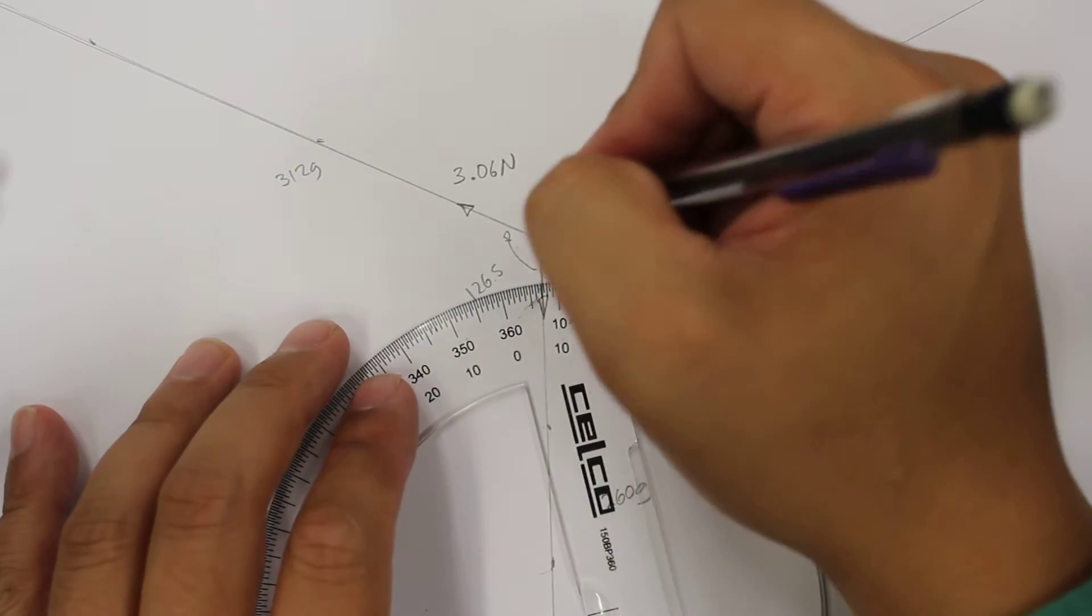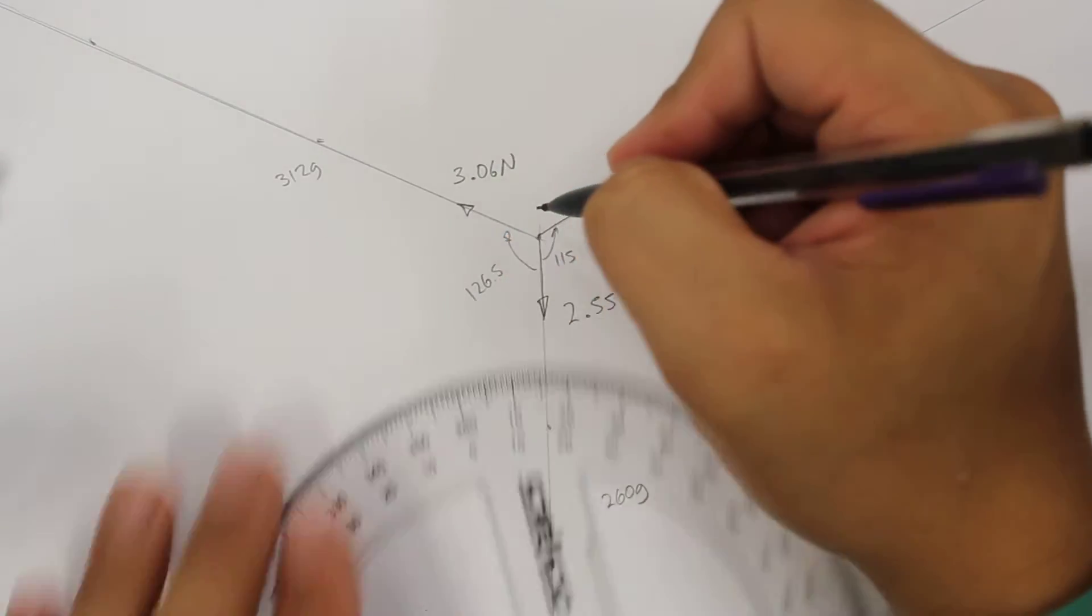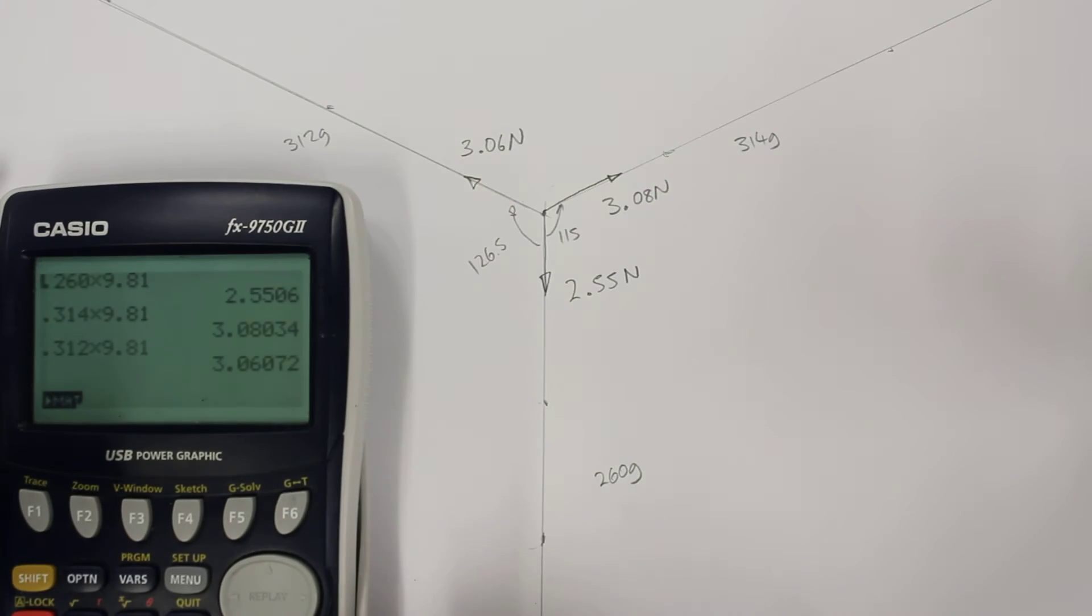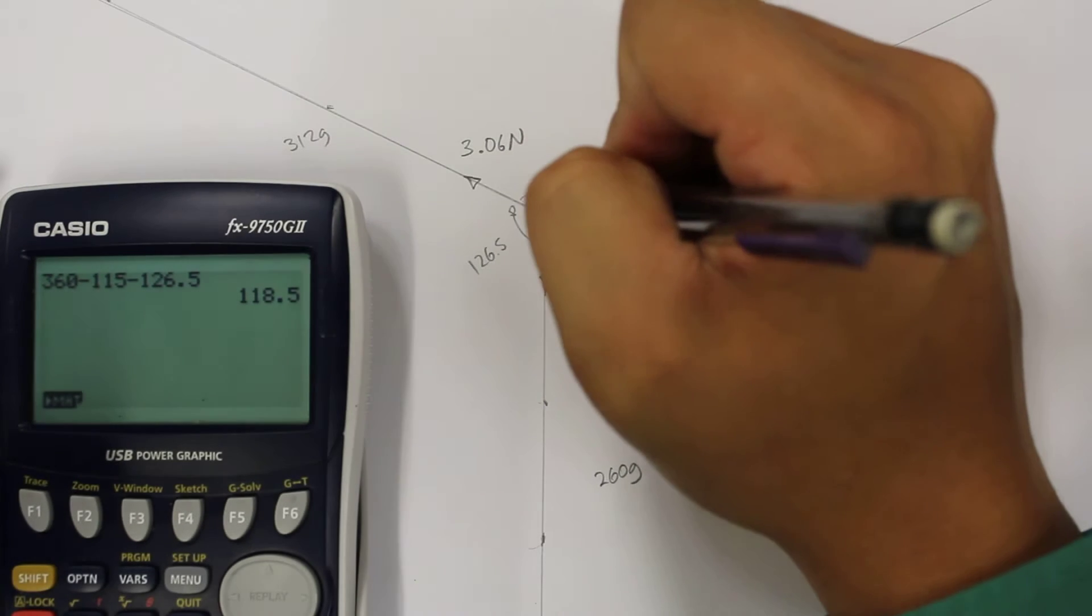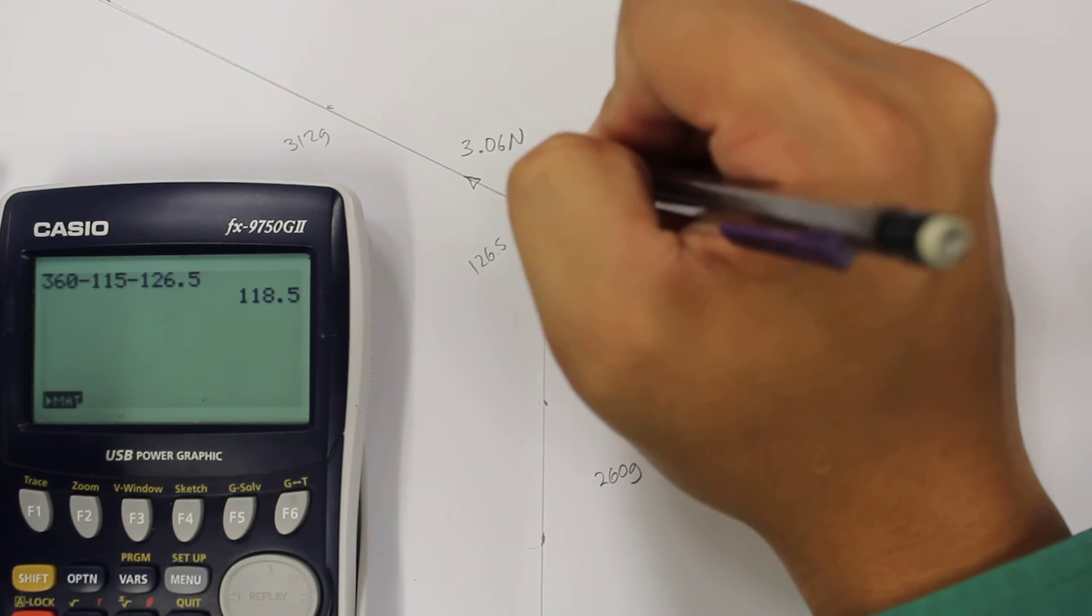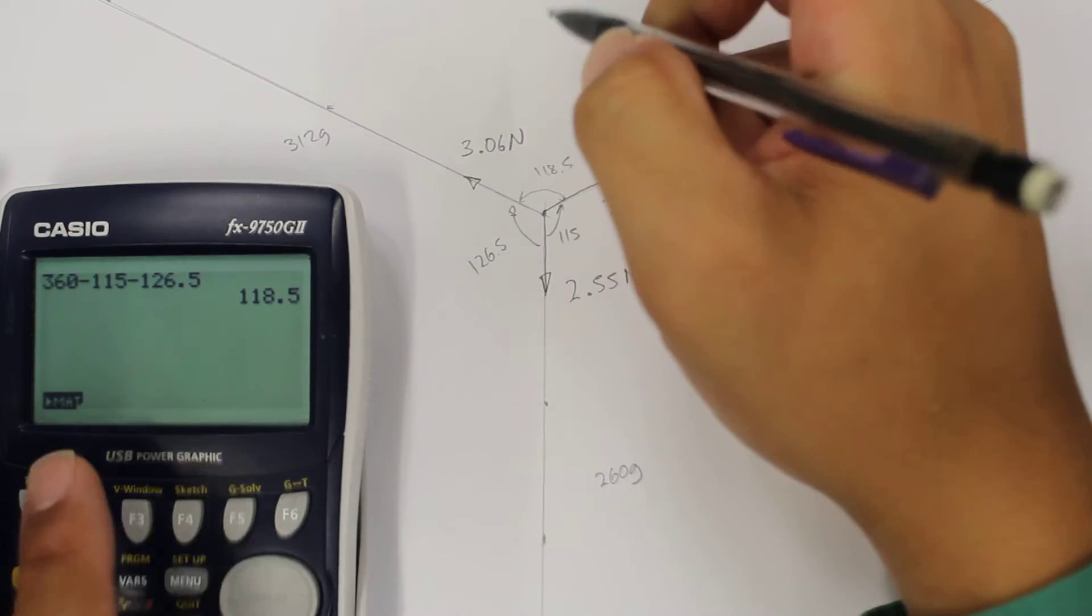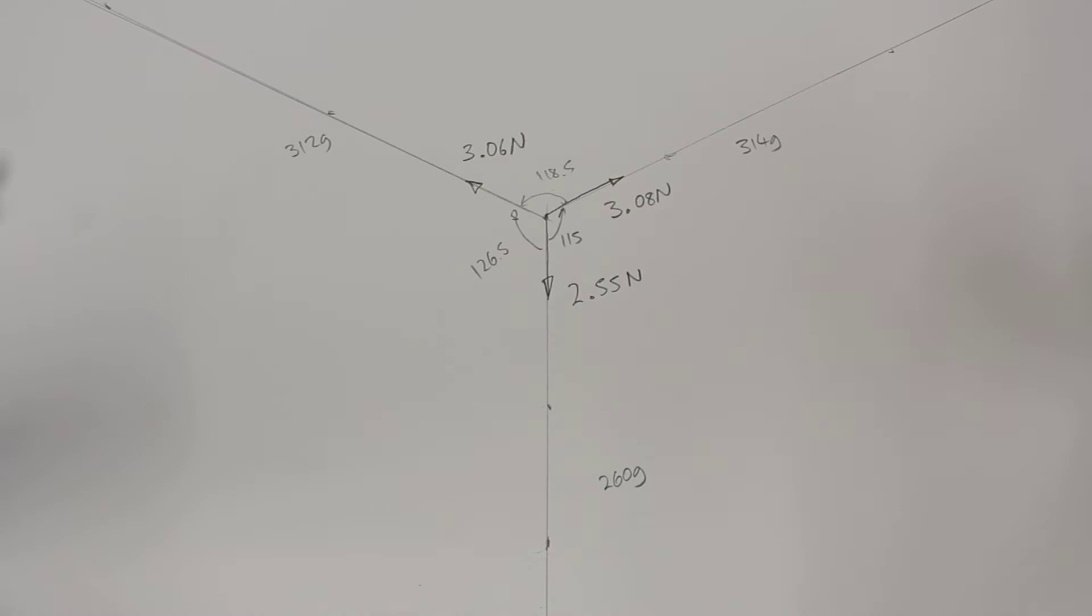And then that leaves the remaining angle over here. So that should approximately be 360 minus 115 minus 126.5. So this angle here should be 118.5, and we can verify that as well.